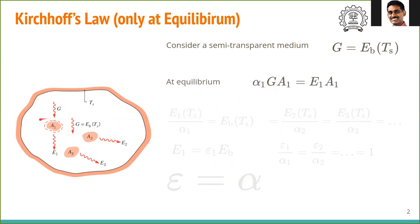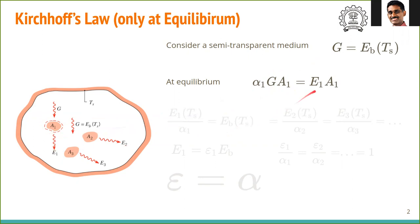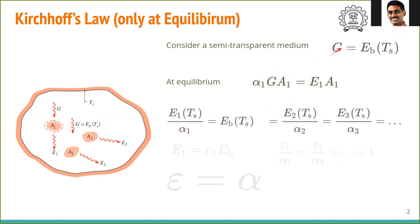At equilibrium, if you balance the heat flux, energy that comes in and energy that goes out must be equal. Energy absorbed is alpha-1 times G times A1 (in watts). Similarly, emission from here is E1 times A1, where E1 is the emission intensity. So A1 cancels and we have E1 divided by alpha-1 equal to G.